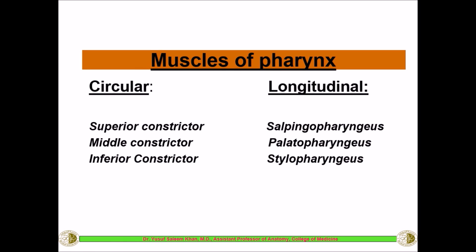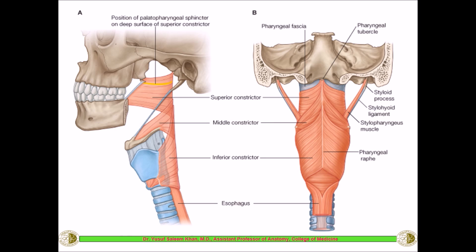The muscles which form the pharynx are of two types: circular muscles and longitudinal muscles. The circular muscles are three: the superior constrictor, middle constrictor, and inferior constrictor. The longitudinal muscles are also three: the salpingopharyngeus, the palatopharyngeus, and the stylopharyngeus muscles — named based on their origin.